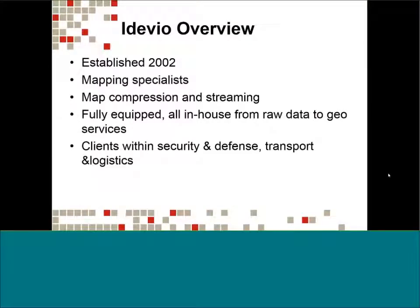To kick us off, IDVO is a Swedish company established in 2002. They are mapping specialists with very broad knowledge of mapping. They built a product for Qlik on their mapping engine — this was not a group of Qlik experts that decided to build a mapping product, but rather a company with deep experience in mapping that decided to build an extension for Qlik. They do compression and streaming of mapping, all the work in-house from raw data to geo services, and they have clients in security, defense, transportation, and logistics.